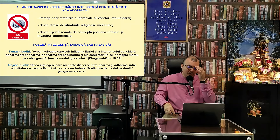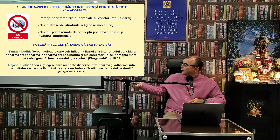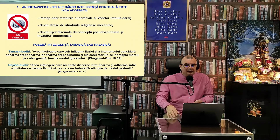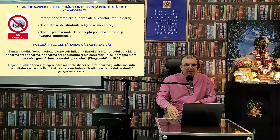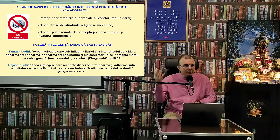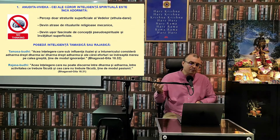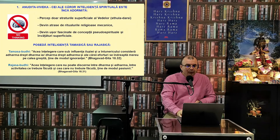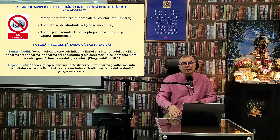Krishna descrie: acea înțelegere care, sub influența iluziei și a întunericului, consideră Adharma drept Dharma și Dharma drept Adharma — ce este bine, ce este rău, ce este armonios, ce este nearmonios — ale cărei eforturi se îndreaptă mereu pe calea greșită, ține de modul ignoranței.